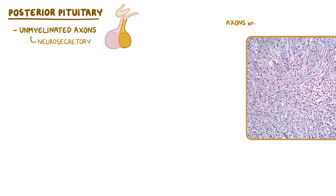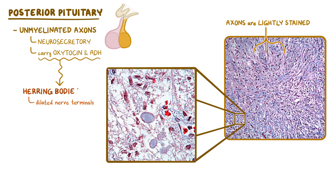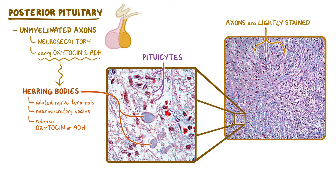Let's move on to the posterior pituitary, which consists mostly of unmyelinated axons with neurosecretory activity. These axons can be seen throughout the image as the lightly stained portions of the tissue. The axons carry oxytocin and antidiuretic hormone, or ADH, from the hypothalamus down to their dilated nerve terminals called herring bodies, which are neurosecretory bodies. The herring bodies release either oxytocin or ADH, which is carried away by nearby capillaries. Also seen more clearly in this image are the highly branched pituitocytes, which are the supporting glial cells.